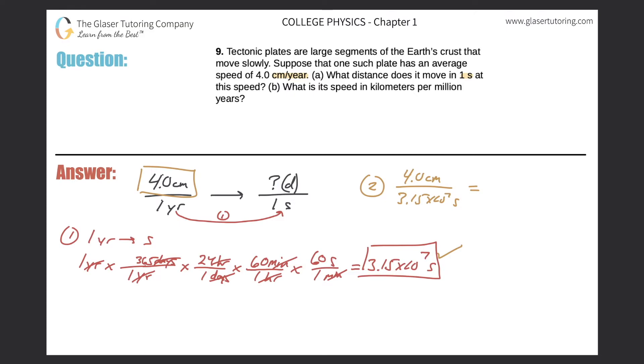So that gives me a value of 1.3 approximately times 10 to the negative 7 centimeters per second. And that should make sense, right? I mean, if this tectonic plate is going to travel 4 centimeters in a whole year, then it should be traveling a very small fraction of centimeters in one second. So this would be the answer to part A.